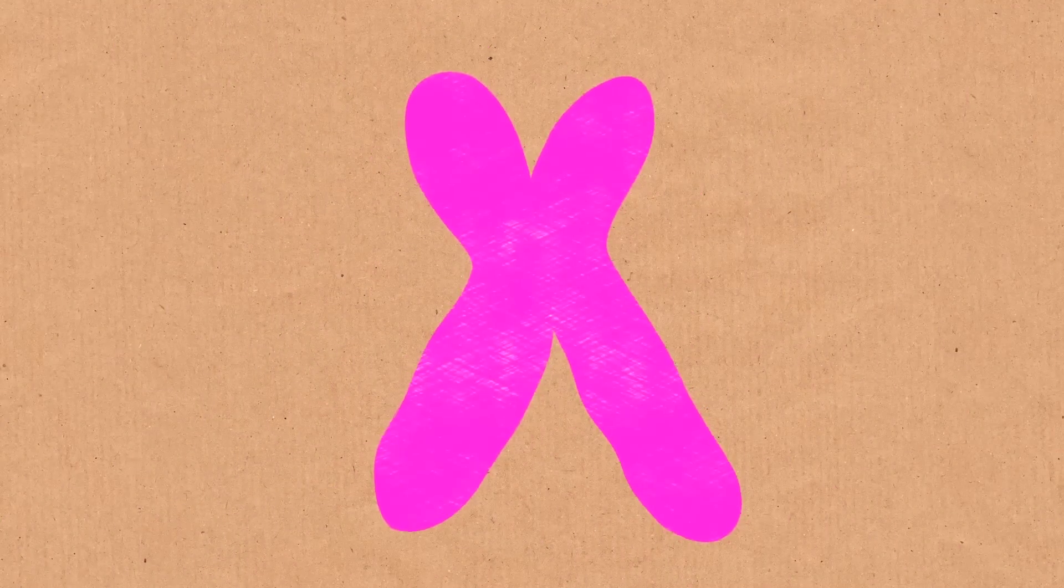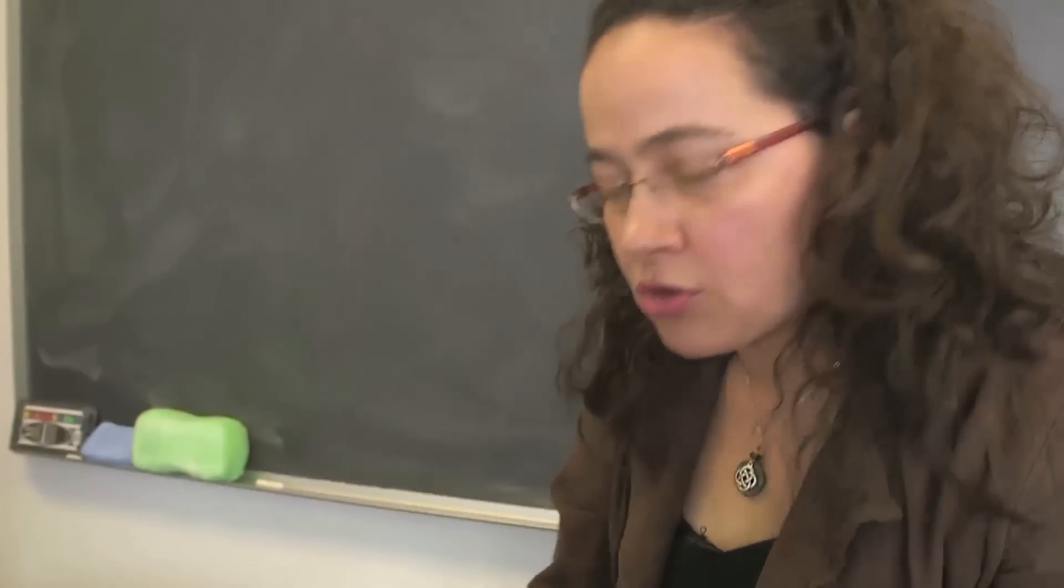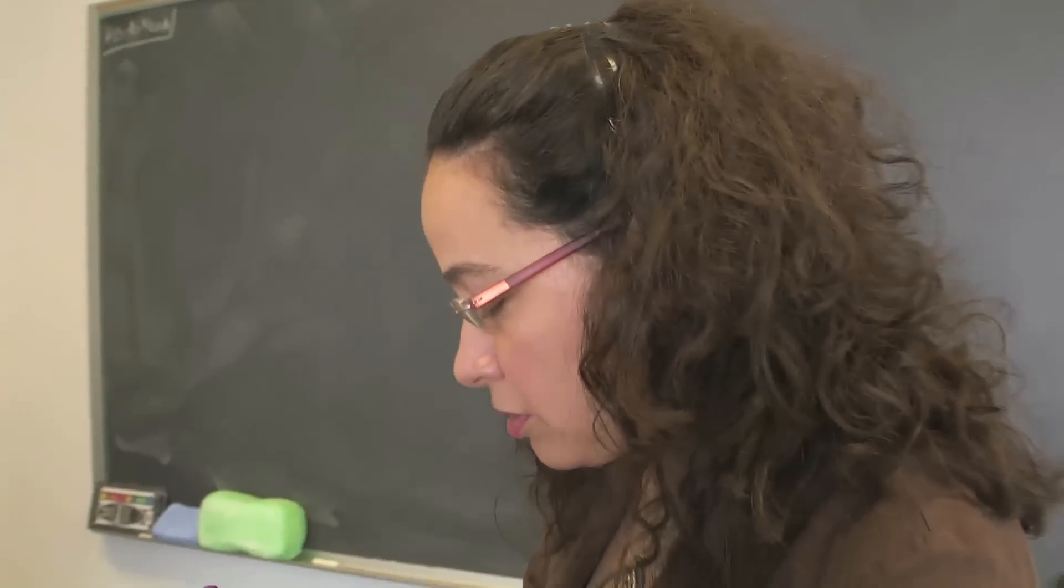Now, if we look at the cell cycle for a human cell, the chromosomes don't always look like that. The chromosomes look like that at metaphase right before the cell is going to separate into two cells.